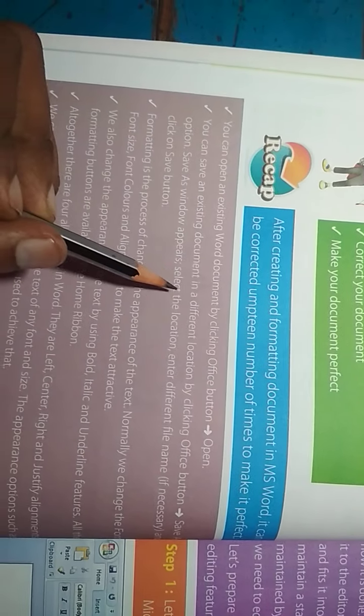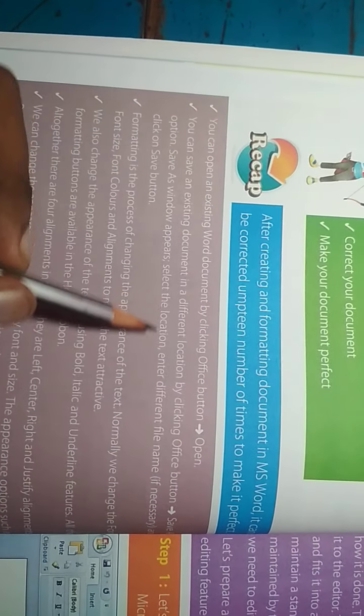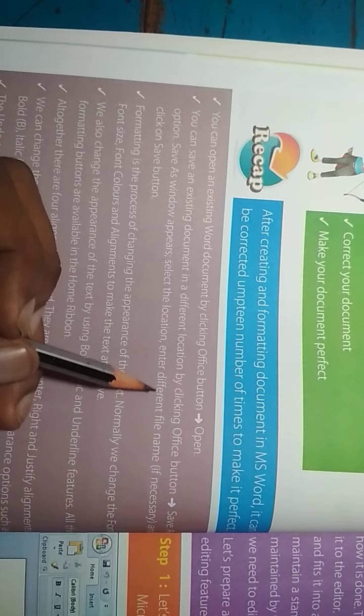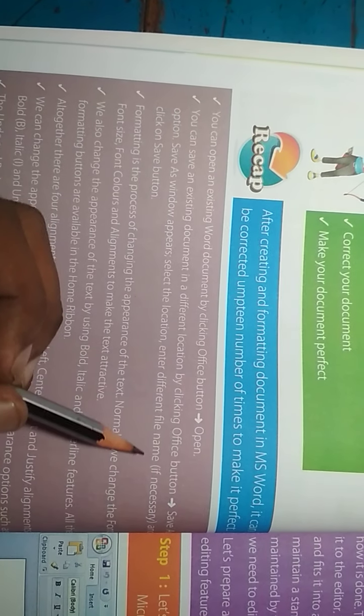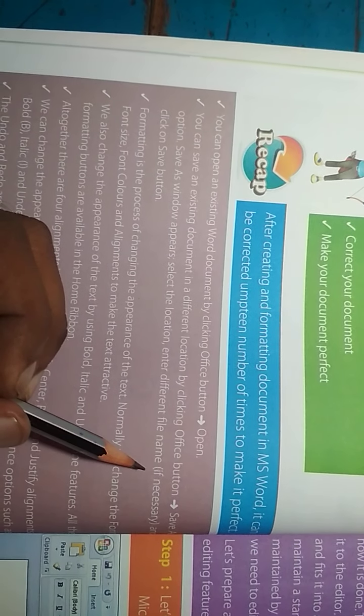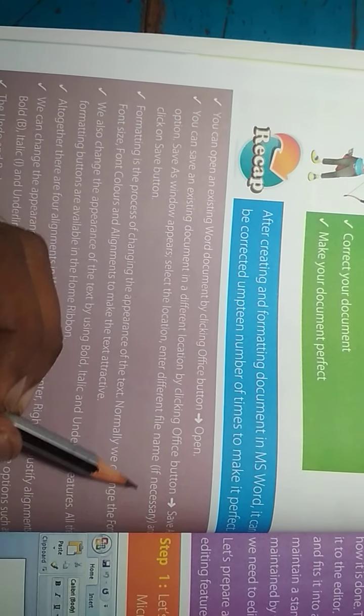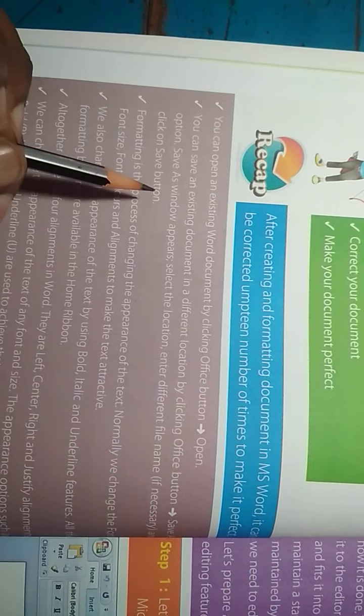Save As को click करते ही एक pop-up menu आता है — Save As का dialogue box open होता है। उसमें अपना file name लिखते हैं, और file name लिखने के बाद उसको save कर देते हैं।